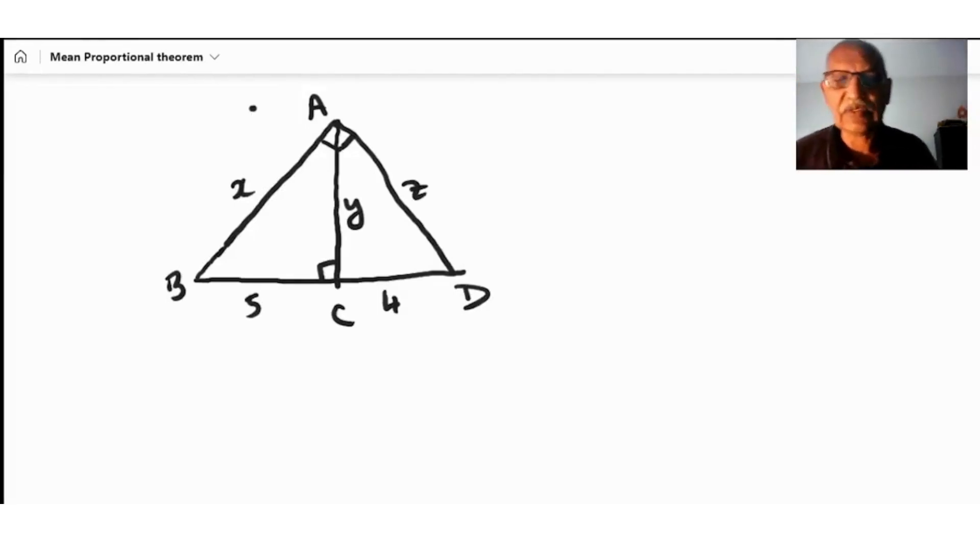Hello everyone, today we'll do another triangle problem with a new formula we don't see a lot in high school. This formula is called the mean proportional theorem.